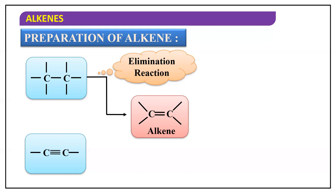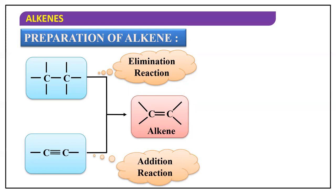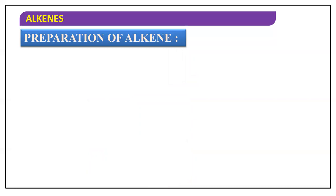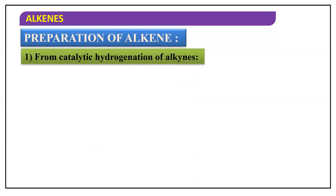An elimination reaction is one where atoms are eliminated from a starting compound. In the case of an alkane getting converted to an alkene, there is an elimination reaction giving us an alkene. Whereas when an alkyne gets converted to an alkene, a triple bond becomes a double bond — which means we need to add something. An addition reaction will give us an alkene from an alkyne. So from an alkane, elimination gives an alkene; from an alkyne, addition gives an alkene.